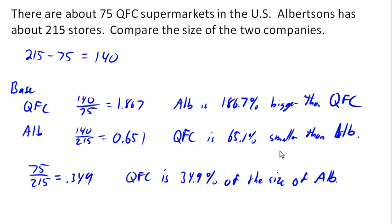Notice that all three of these percents are different. There's another one we could find which would tell us that Albertsons is 2.8 times the size of QFC. So it's really important to consider the base of a percent when you are analyzing what that percent means.